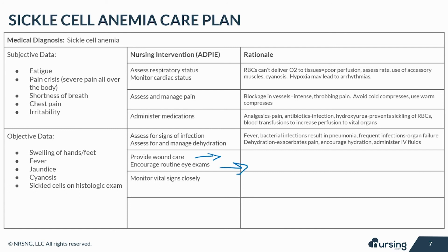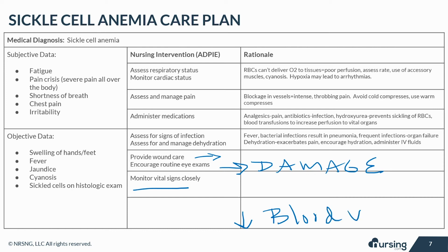Routine eye exams should be encouraged because sickling of red blood cells can damage the vessels in the eyes over time and cause blindness. Monitor vital signs closely because decreased circulating blood volume can result in tachycardia as well as hypotension.